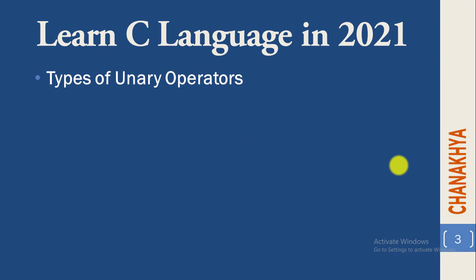Now let's go over the types of unary operators. The first is unary minus. This operator is used to change the value of a variable to negative. If we assign a positive value to a variable and want to make it negative, then we use the unary minus operator.